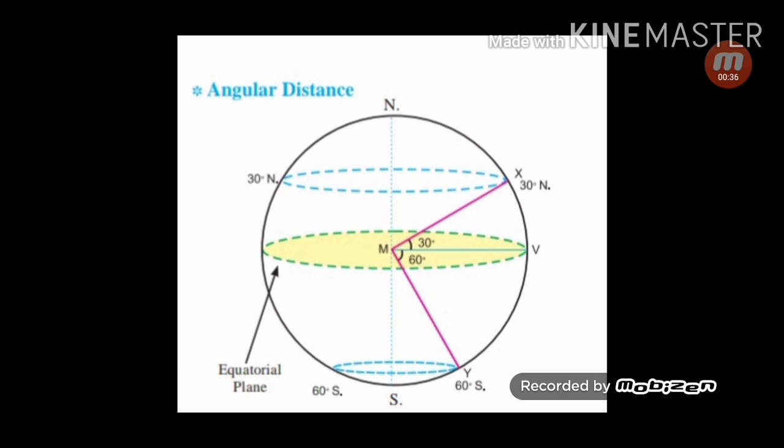That is, its angular distance from the equator is 30 degrees. Look at the figure and tell the angular distance of Y from the equator. It is 60 degrees.